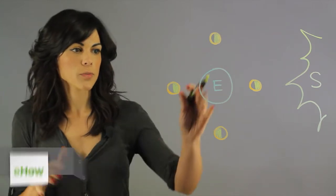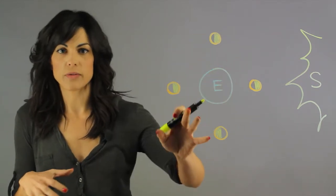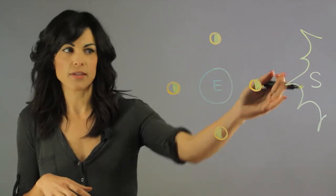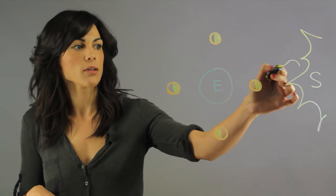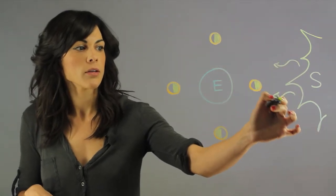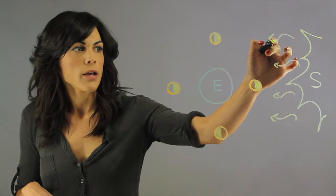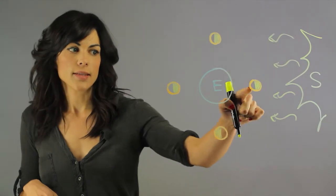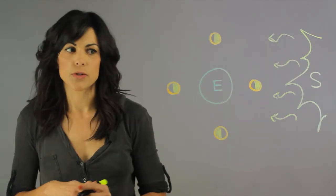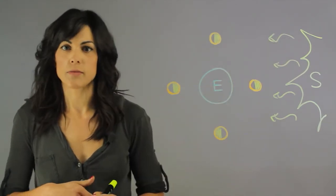So let's picture the earth here, and here's the moon orbit, and here we have the Sun. We have the sunlight coming from here in all directions, and now let's say that the moon is at this position and we're looking at it from this perspective.